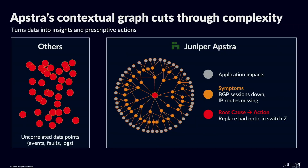We do that by cutting through the complexity. Instead of seeing all these random events and dots and trying to figure out what's going on, Appstra cuts through that complexity by bringing context to that data. We can pinpoint exactly what the root cause is that you need to address and fix, identify related symptoms you can ignore, and determine what applications or training jobs are impacted by that pinpointed issue.